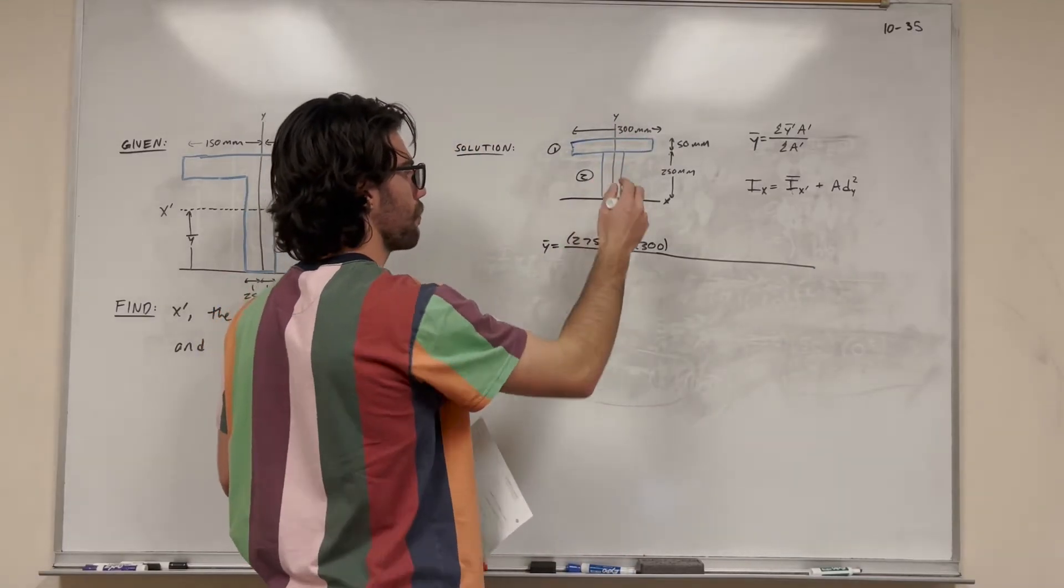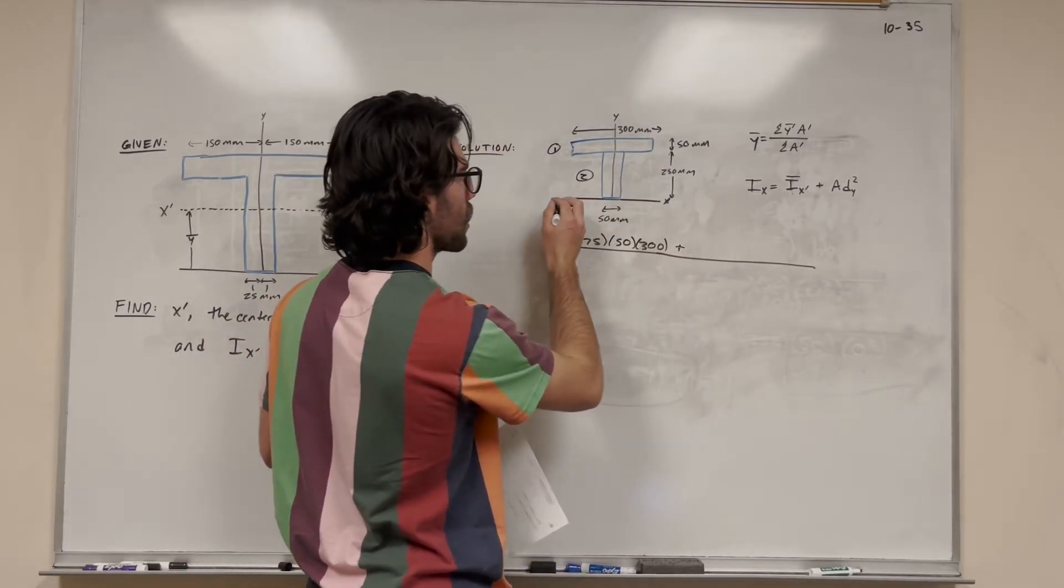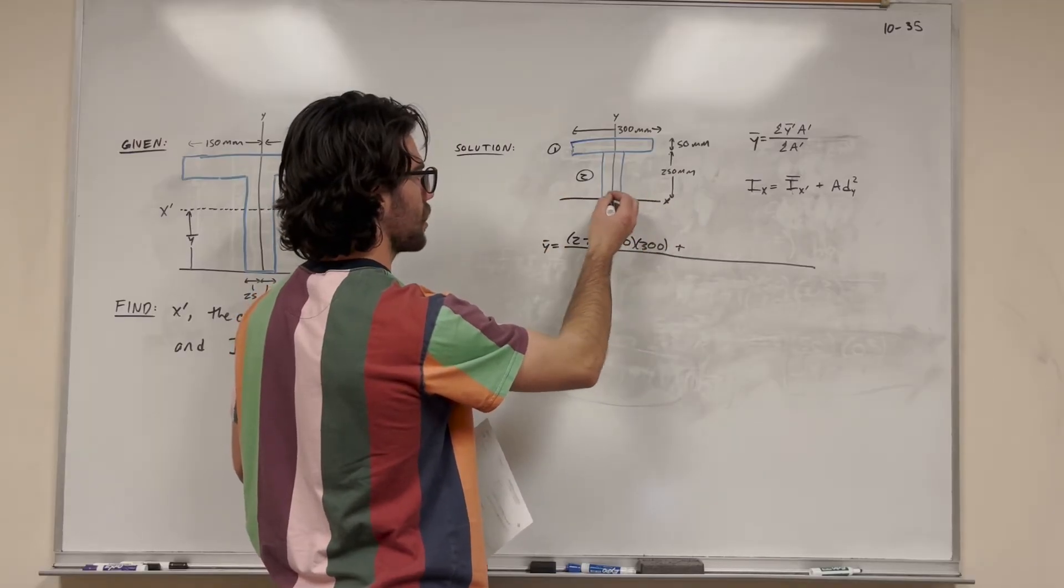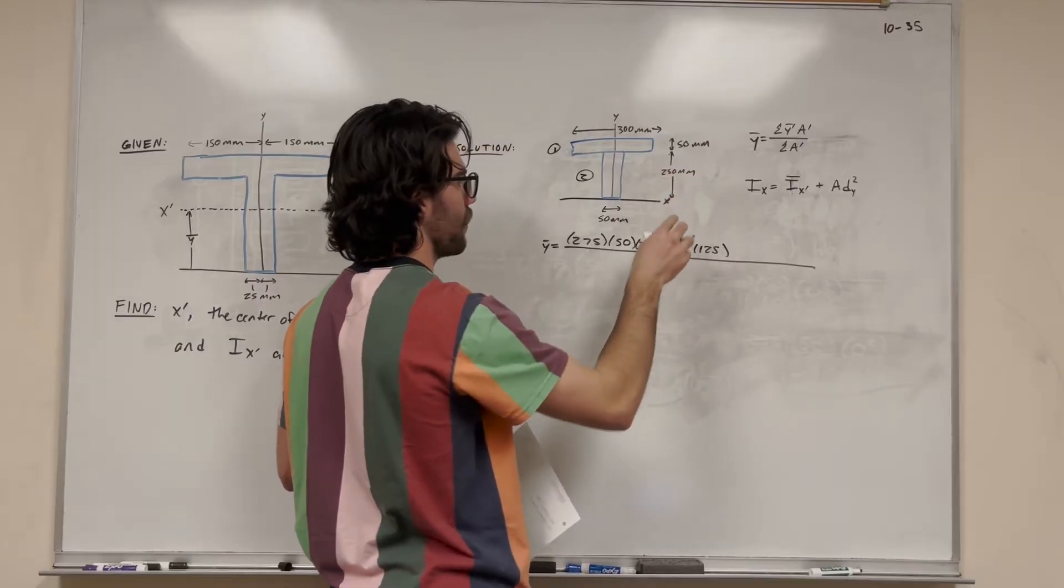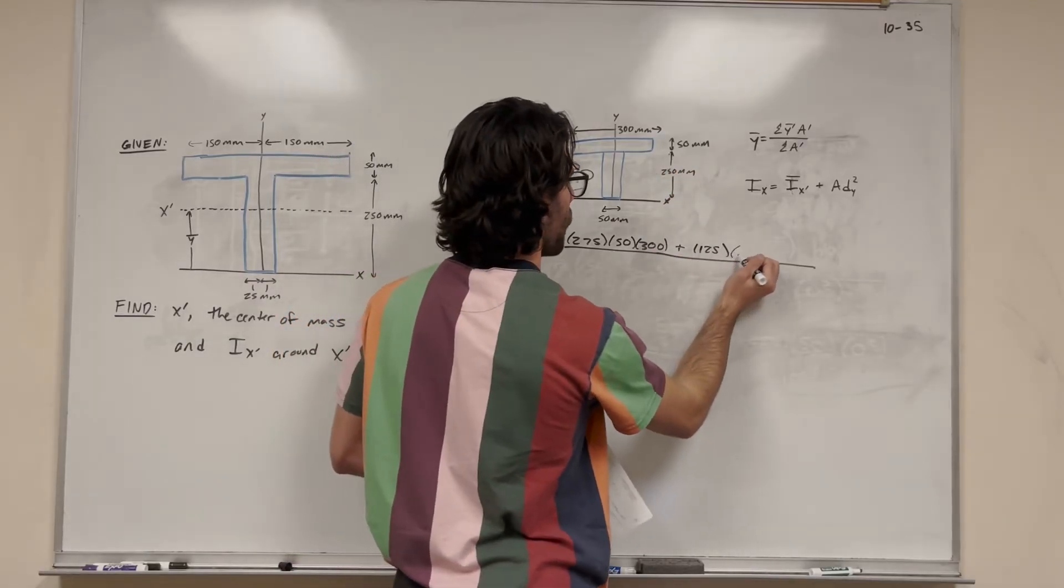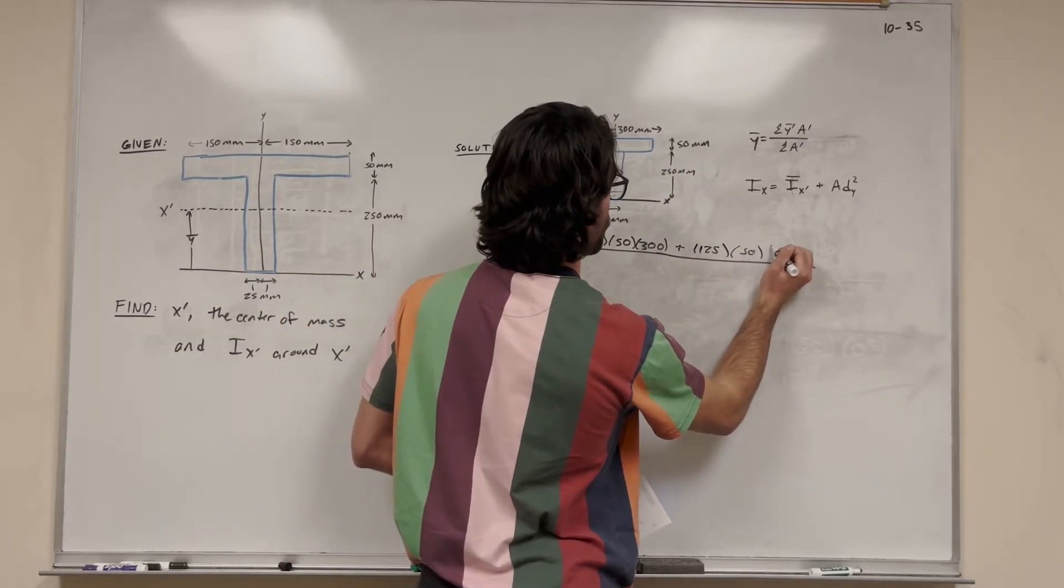And that's for shape one. So now we need to add it up to our second shape. So the second shape is lying, its base is right on the x-axis, so it's just going to be half of its height, 125. That's half of 250. Then we're going to multiply it by its base times its height, so 50 times 250.